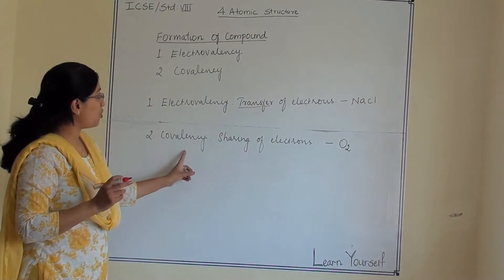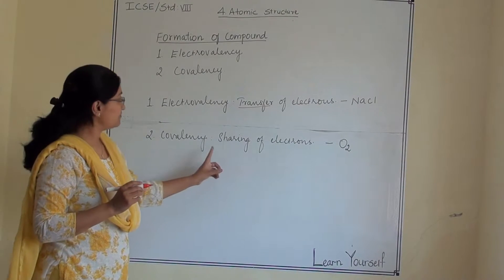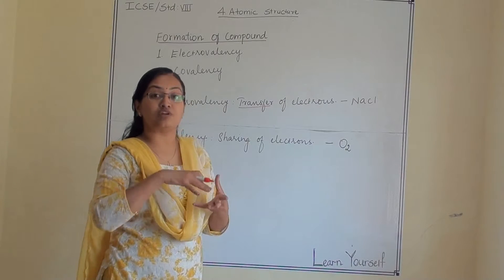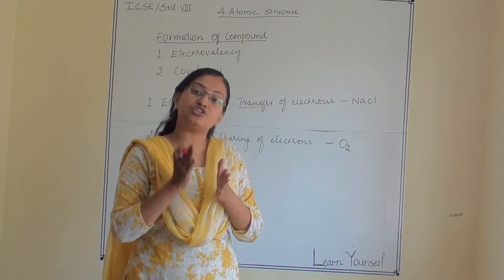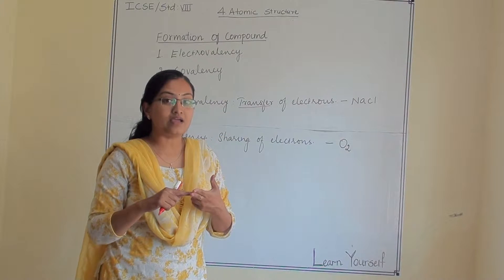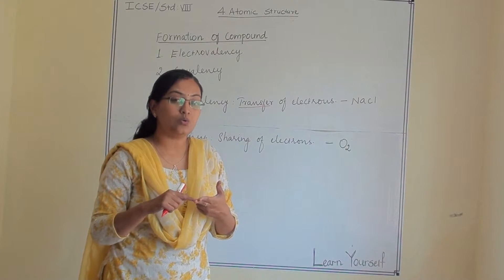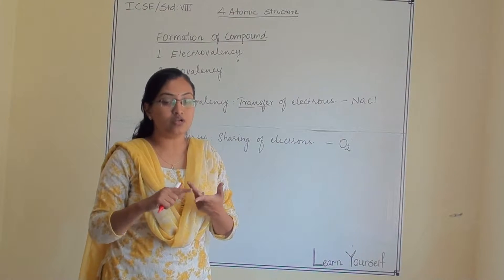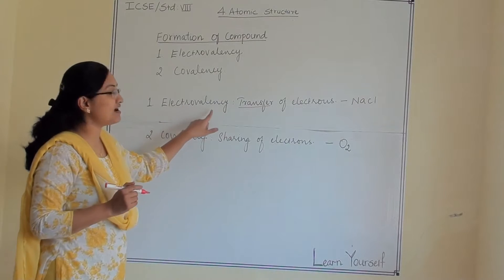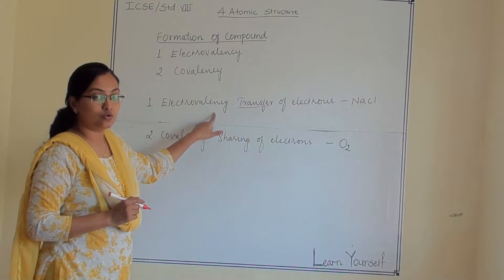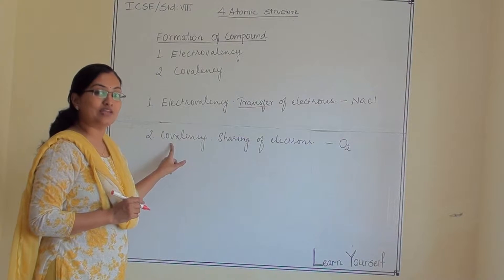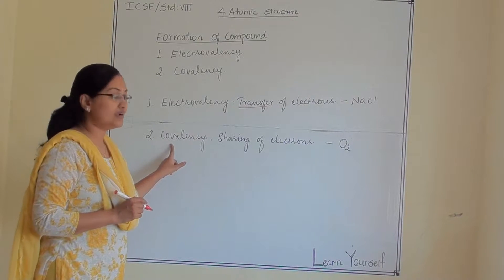The second one is covalency. What is covalency? It is the sharing of electrons. When atoms are not able to transfer electrons, they will share the electrons between them. So there are two types of compounds: one is the electrovalent compound, and the other is the covalent compound. The compound formed via electrovalency is known as an electrovalent compound, and the compound formed via covalency is known as a covalent compound.